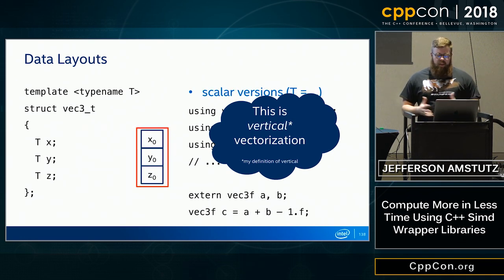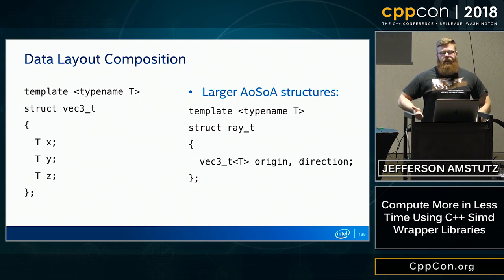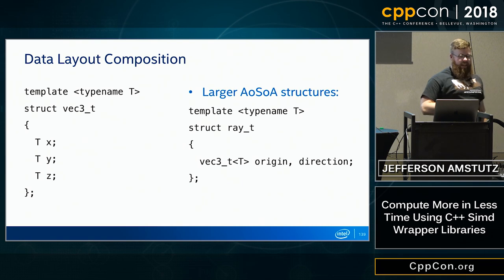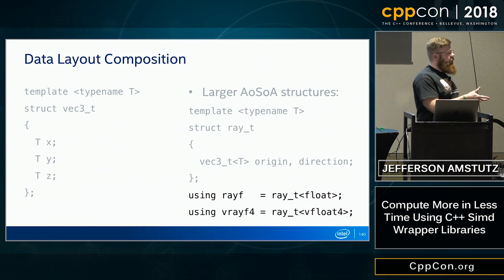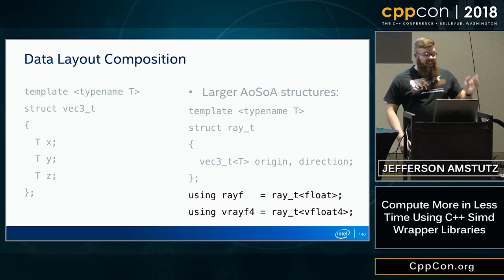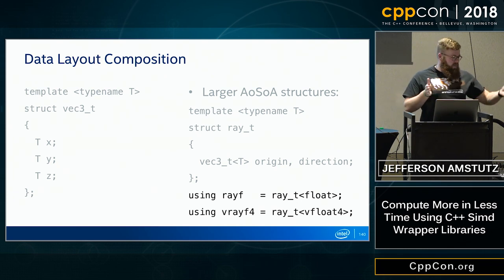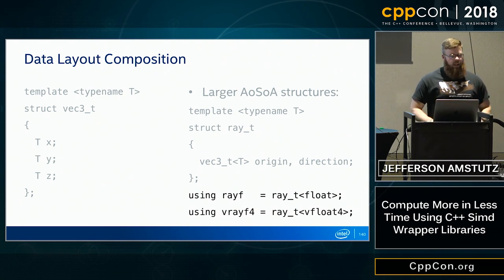Data layout composition: with a templated VEC3<T> and a templated Ray (origin and direction as VEC3s), you can create a uniform ray with scalar float or a varying ray of width 4 with vfloat4. Because VEC3<T> handles the algebraic vector abstraction, you can instantiate very different data layouts with simple type aliases. Consider horizontal vectorization first — whether substituting vfloat directly into data structures or using the load-compute-store pattern, it's more straightforward to implement and reason about.